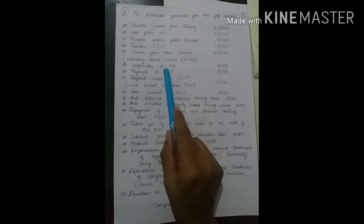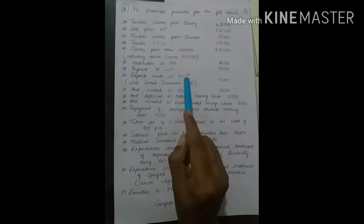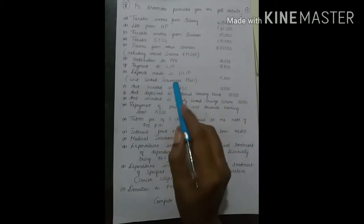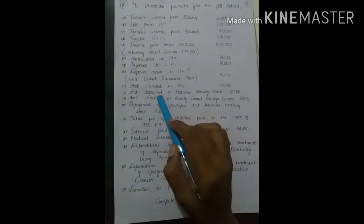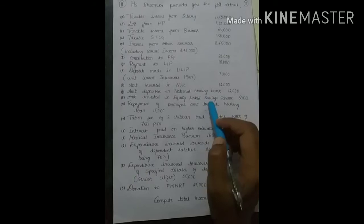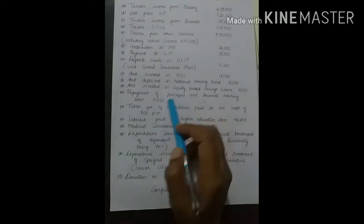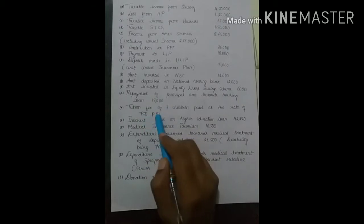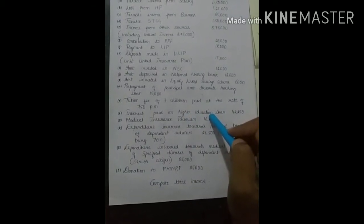One of the items that you have to identify: contribution to PPF, payment to life insurance premium, any deposits made in unit linked insurance plan, amount invested in NSC, any deposits in national housing bank, amount invested in equity linked savings scheme, repayment of principal amount towards housing loan, tuition fees paid at the rate of 750 per month for three children, 750 per month into 12. Higher education loan, interest on education loan.